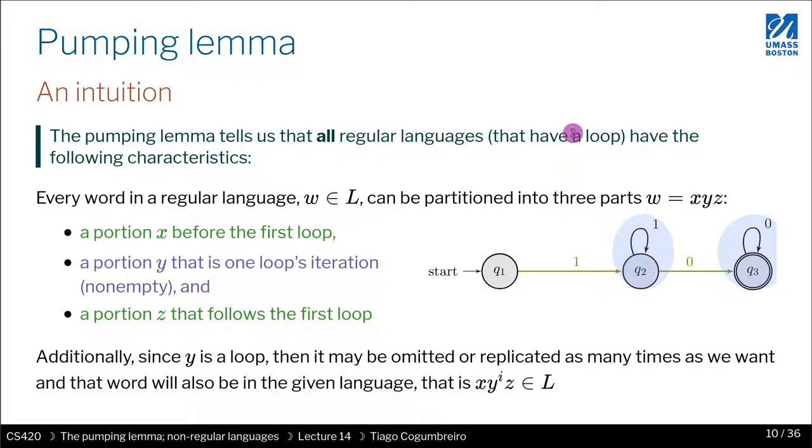...or indirectly through another state. For instance q2 goes to some q4 and then some q5 and then eventually goes back to q2. In that case as well you could find a length that is at least the number of all states such that you would have to necessarily go through that loop.